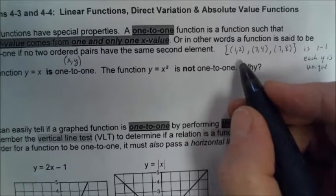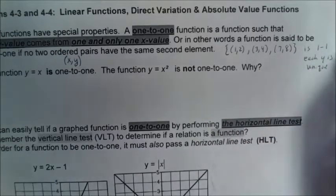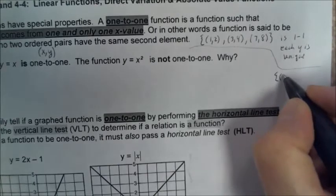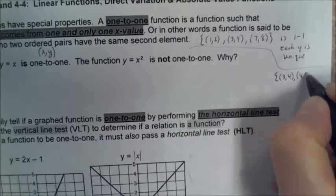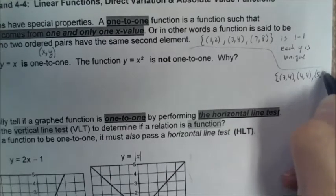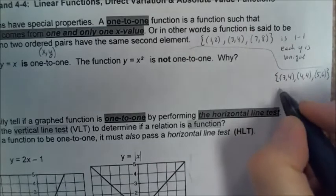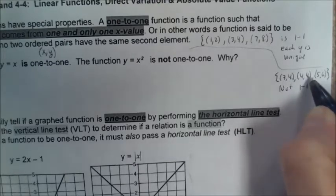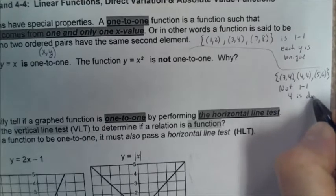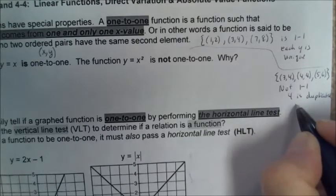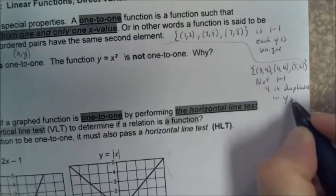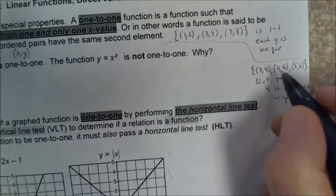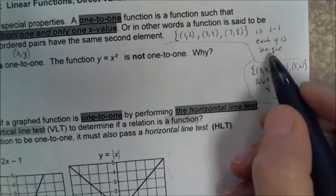On the other hand, if we have a set of ordered pairs like (3,4), (4,4), (5,6), this is not one-to-one because these two y values are duplicates. This four and this four are the same number — four is duplicated in the y values. So whenever you have two y values that are the same, it is not one-to-one. There are your two examples of what is one-to-one and what is not.